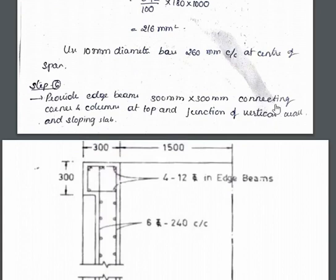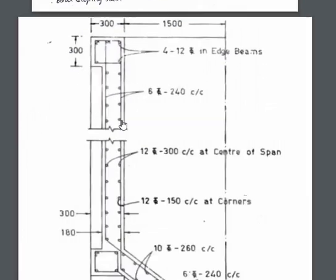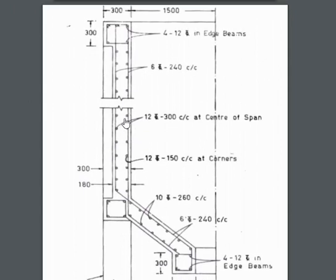Provide edge beams of 300 mm × 300 mm connecting corners and columns at the top and at the junction of the vertical wall and the sloping slab, in order to provide more rigidity to the structure. The reinforcement diagram shows: edge beams, reinforcement at the corners (different arrangement), and reinforcement at the center (different arrangement). Check all the reinforcement details and cross-check with what we have calculated.